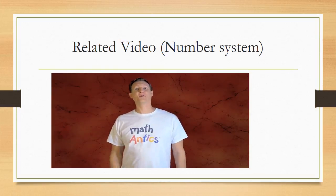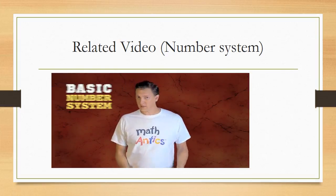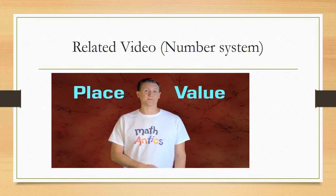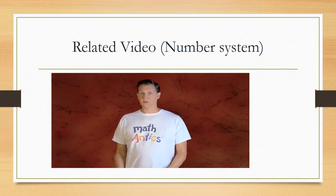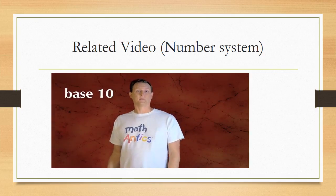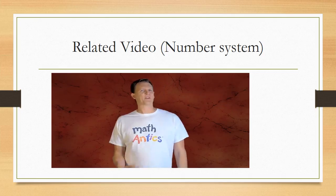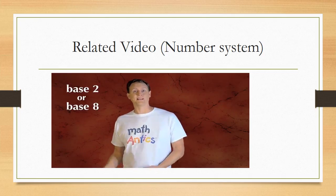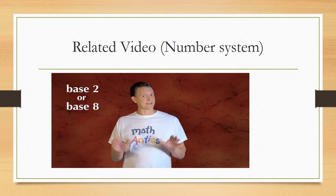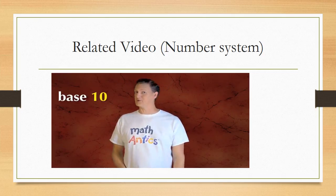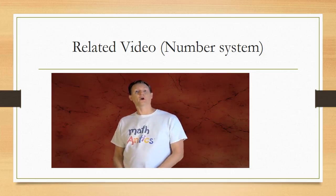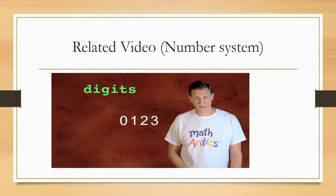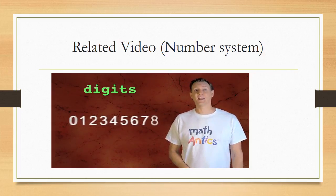Hi, I'm Rob. Welcome to Math Antics. In this lesson, we're going to learn how our basic number system works and about an important concept called Place Value. The number system we use in math is called Base 10, because it uses 10 different symbols for counting. The 10 symbols we use are called digits and they are: 0, 1, 2, 3, 4, 5, 6, 7, 8, and 9.